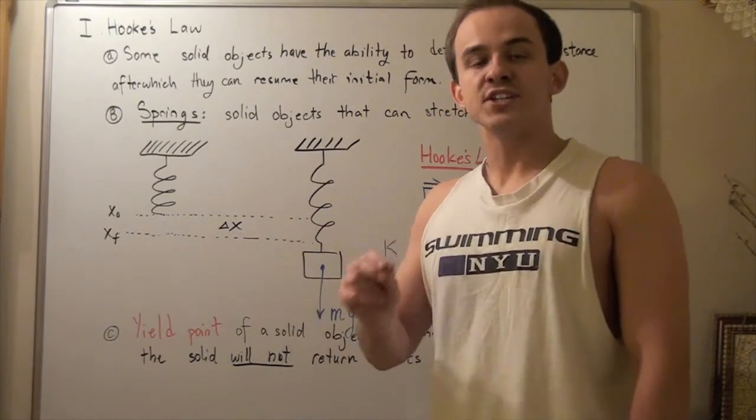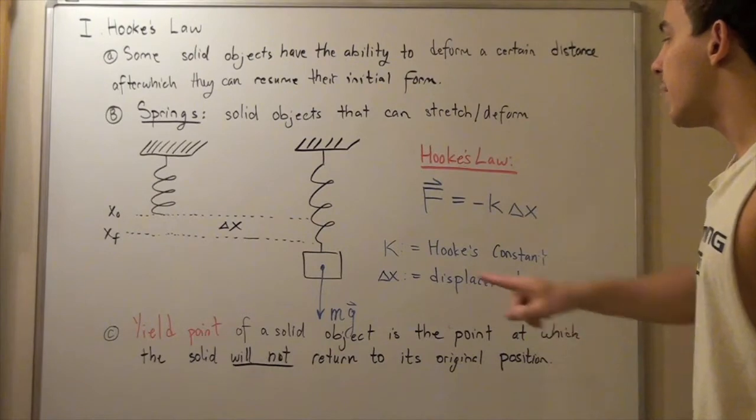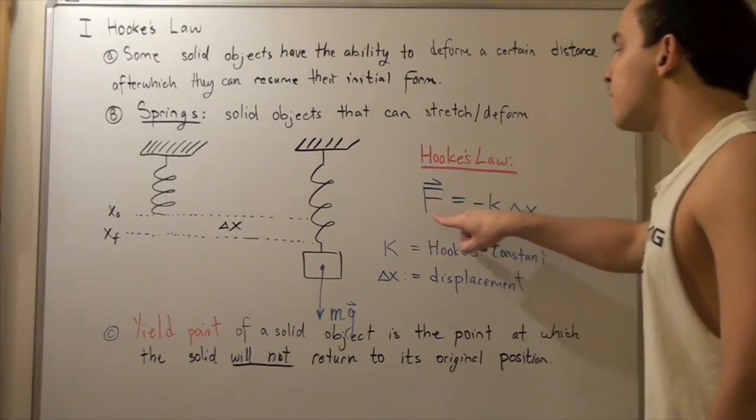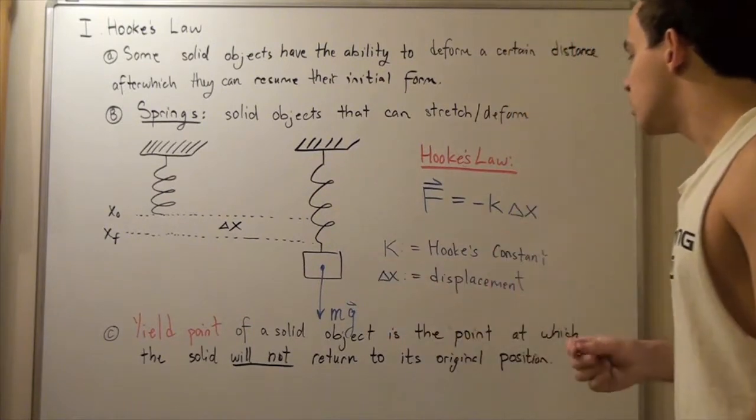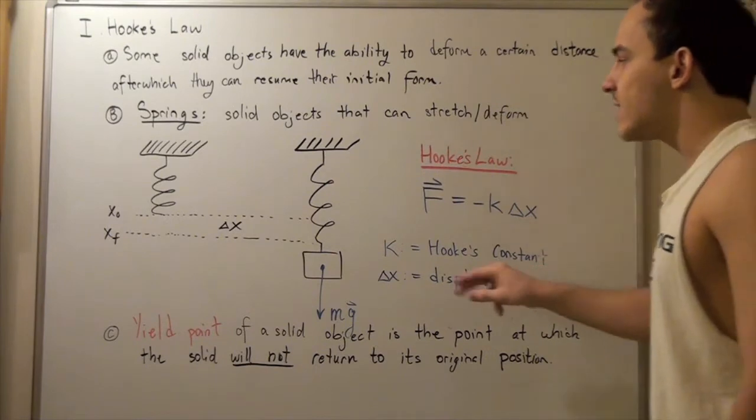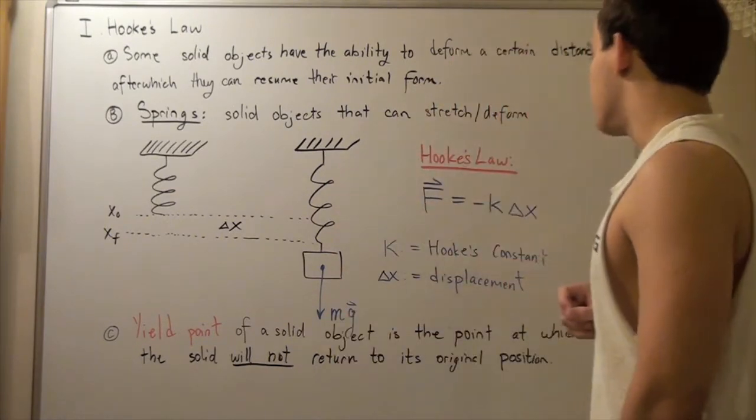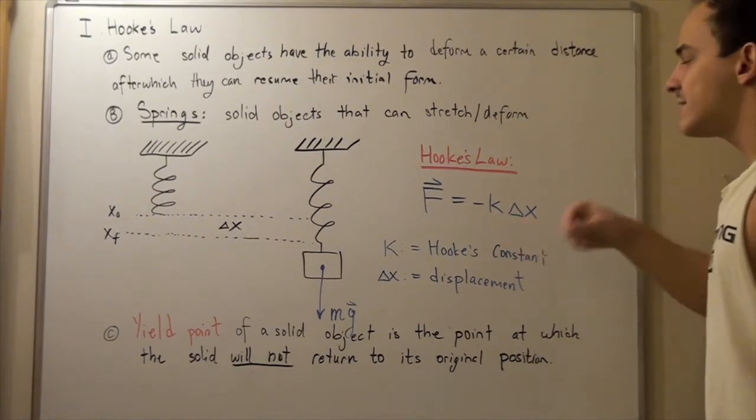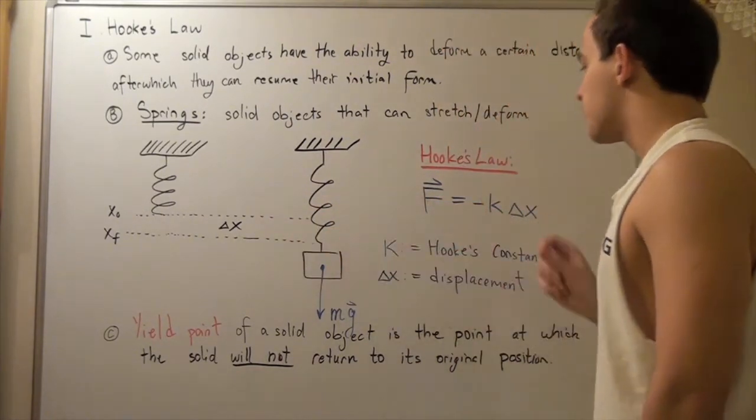To find this, we have to use a certain law known as Hooke's law. Hooke's law is given by the following equation. The force applied to my string is equal to the negative of Hooke's constant. This constant depends on the type of string and the material that the string is made from. This change in x is simply the displacement or distance traveled by the spring.